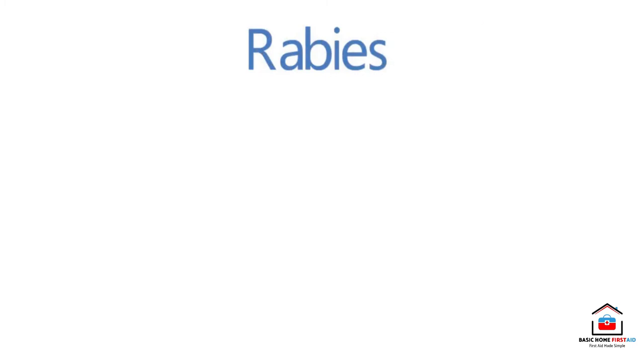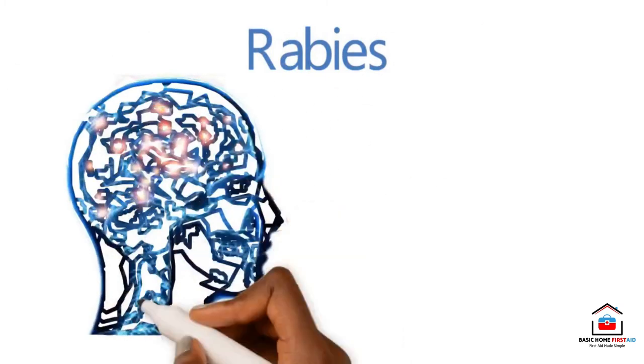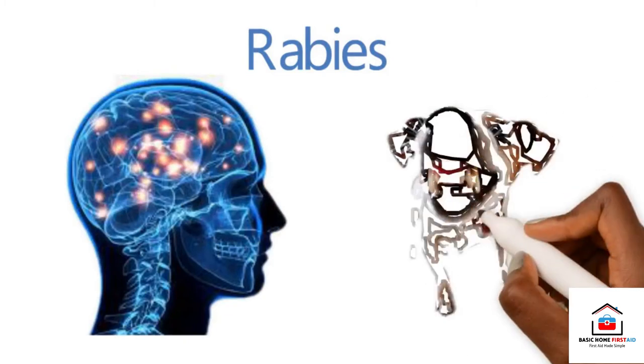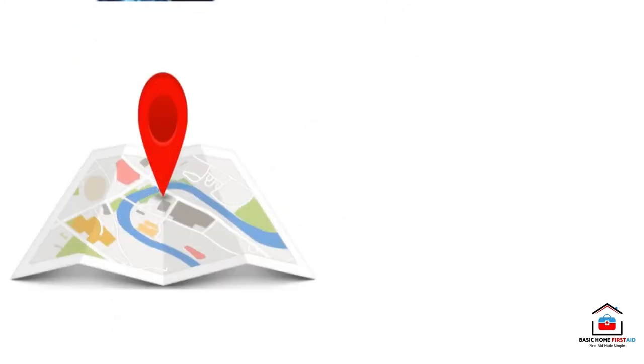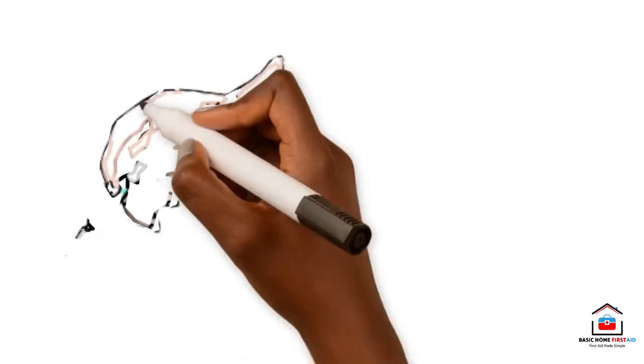A serious risk of rabies, a potential viral infection of the nervous system. The virus is carried in saliva of infected animals. If bitten in an area where there is a risk of rabies, seek medical advice because the casualty must be given anti-rabies injection.